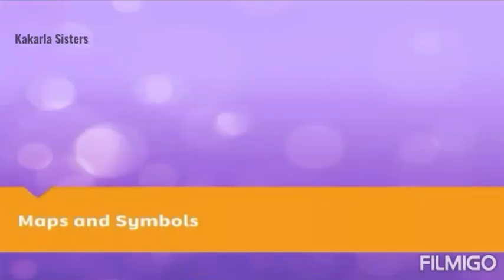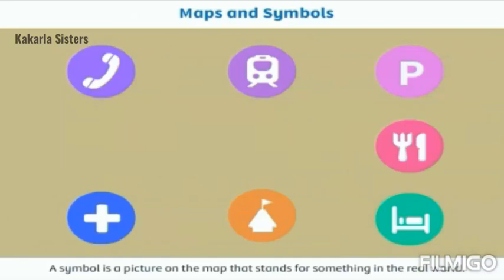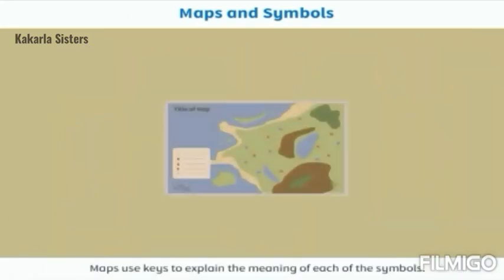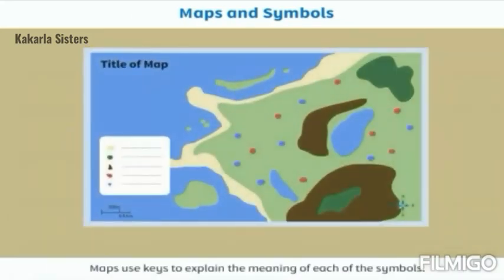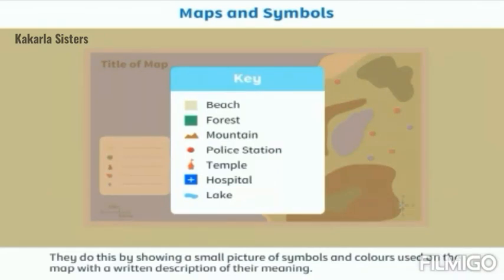Maps and symbols. A symbol is a picture on the map that stands for something in the real world. Maps use keys to explain the meaning of each of the symbols. They do this by showing a small picture of symbols and colors used on the map with a written description of their meaning.